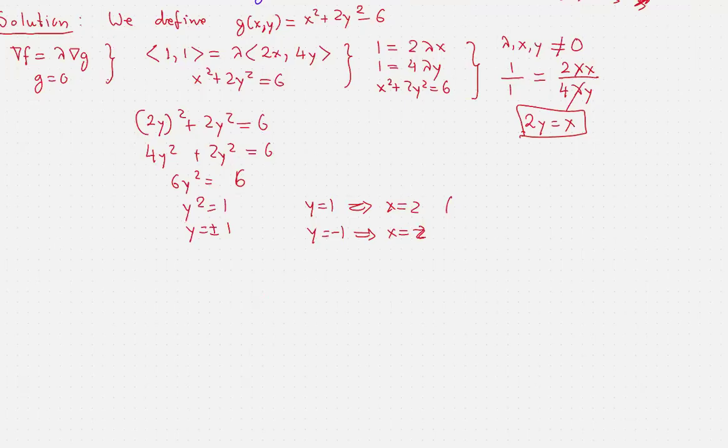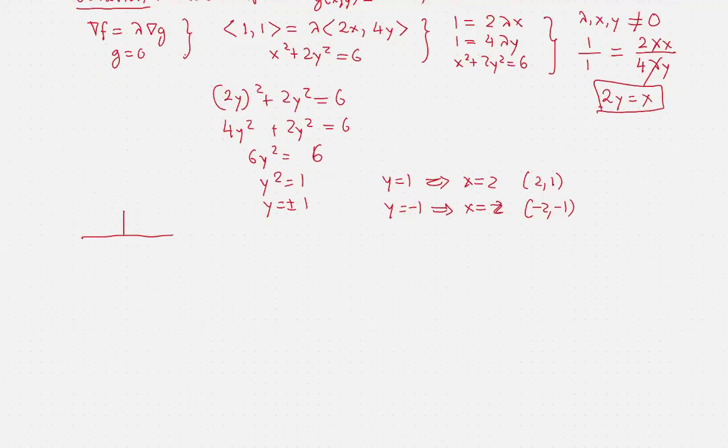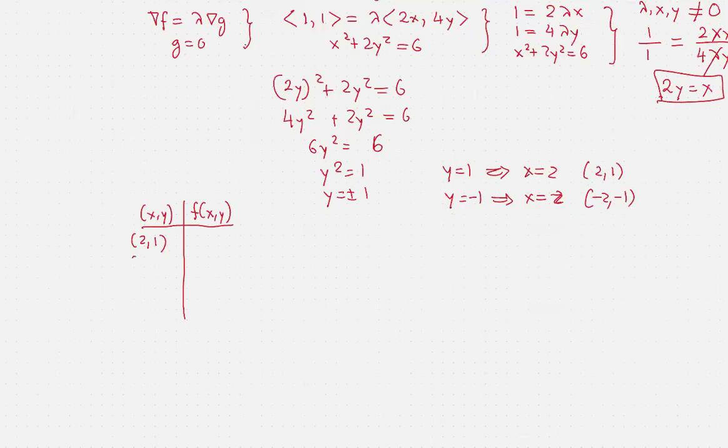Okay, now our constraint defines a compact set, the ellipse, which means that the minimum and the maximum are guaranteed for the function. And that's why we build a table. We put the candidate points on this table and then we evaluate the objective function, which is x plus y. So this gives us 3, this gives us negative 3.